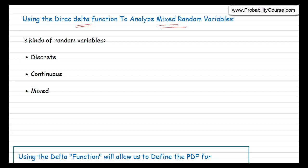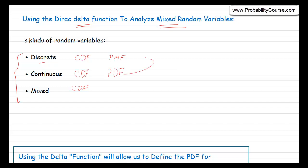Remember that there are three kinds of random variables: discrete, continuous, and mixed. We have already seen that we can use the CDF to analyze all of them. We have also seen that for discrete random variables it is often easier to use a probability mass function, and for continuous random variables we have the PDF. Now what we want to do is extend the concept of the PDF to discrete and mixed random variables — we are going to call it the generalized PDF — and we can accomplish this using the delta function.